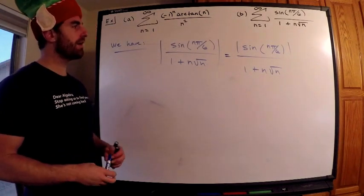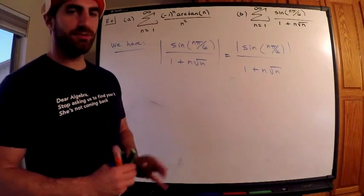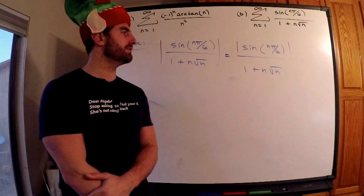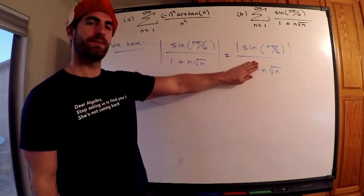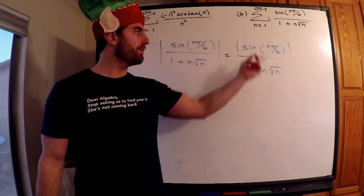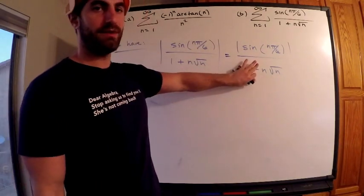So, this is equal to the absolute value of sine n pi over 6 divided by 1 plus n root n. Now, let's deal with the denominator. If I take away, you should be thinking again. I mean, think, always be thinking p-series or geometric. If I take away this 1, in other words, if I make the denominator smaller, the whole number gets larger. Take away the 1, the denominator gets smaller.